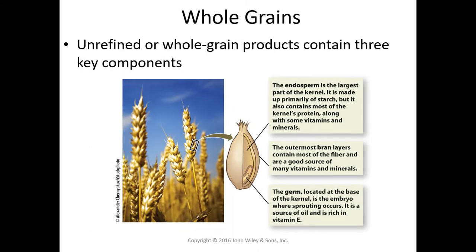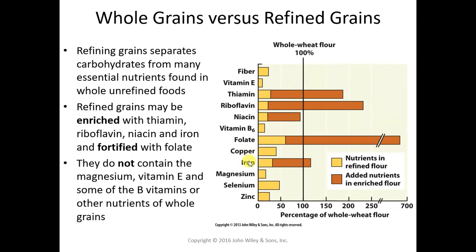If you do consume grains, you want them to be whole grain. Read in your textbook about how to tell the difference between a whole grain and a refined grain. The whole grain has the whole kernel — the bran, the germ, and the endosperm. The endosperm is the starchy part that remains when a grain is refined. When the grain is refined, you lose all of the nutrients, so producers add back some vitamins and minerals, giving us enriched grain — which is still refined and still inferior to a whole grain product.